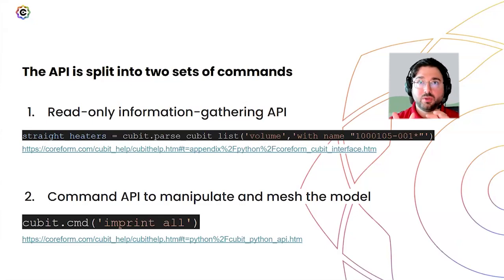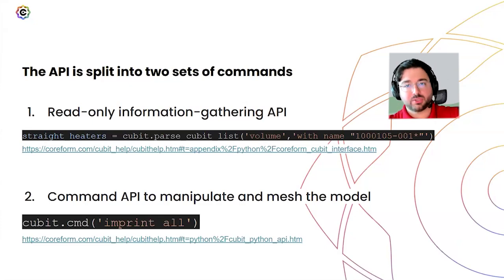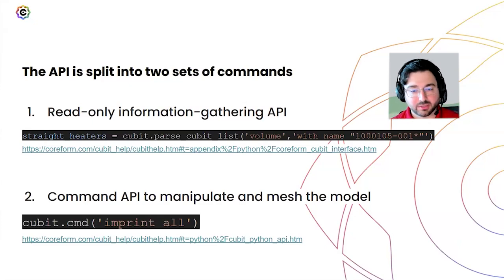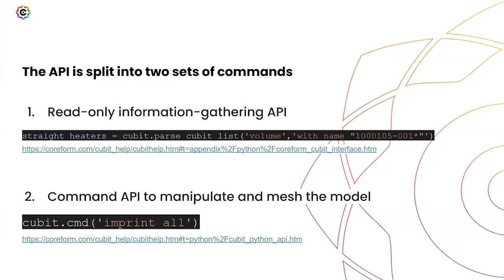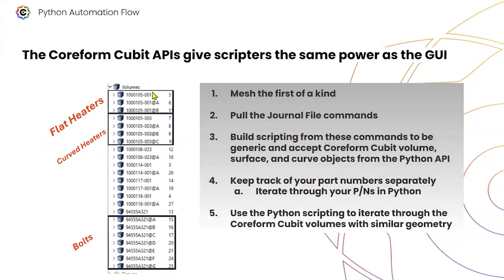The command API is useful because it lets you visually separate parts of the program that are doing one thing versus the other. The documentation is great and you can explore it in the GUI to get the commands you need. As I was working through this demonstration, there are patterns of part numbers that repeat.